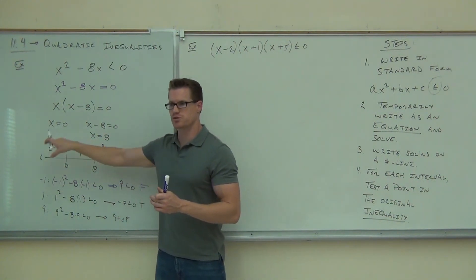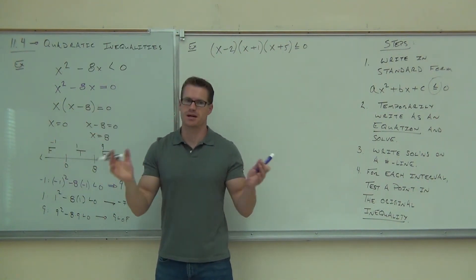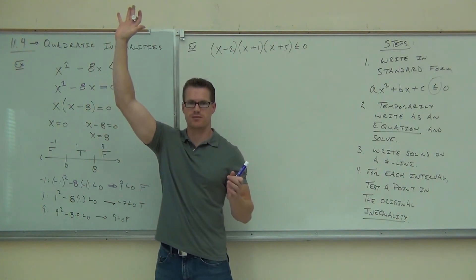So we want to make sure that we're triple checking your work. It has to go false, true, false for quadratics. It's got to do that. How many people feel okay with this?